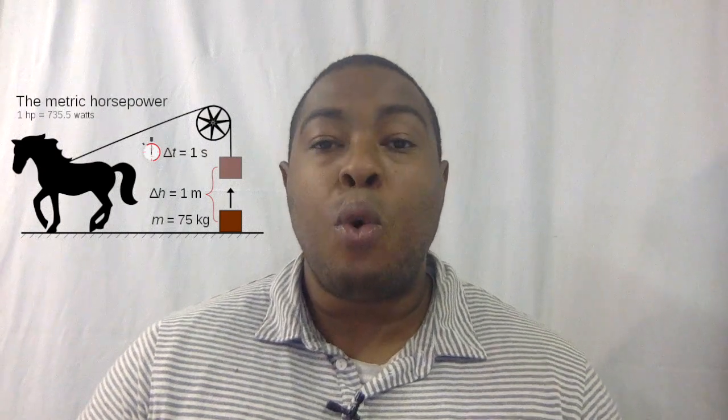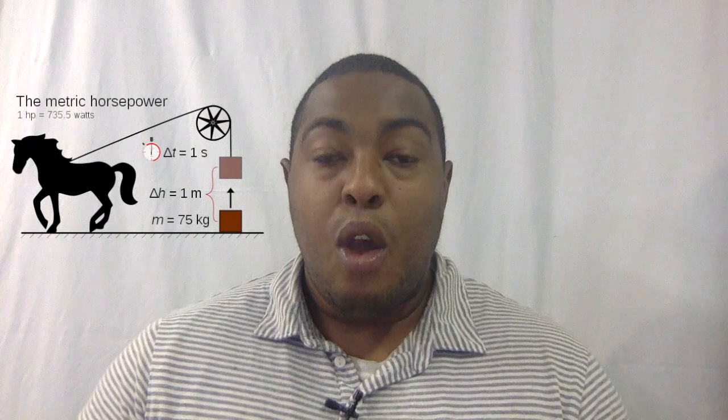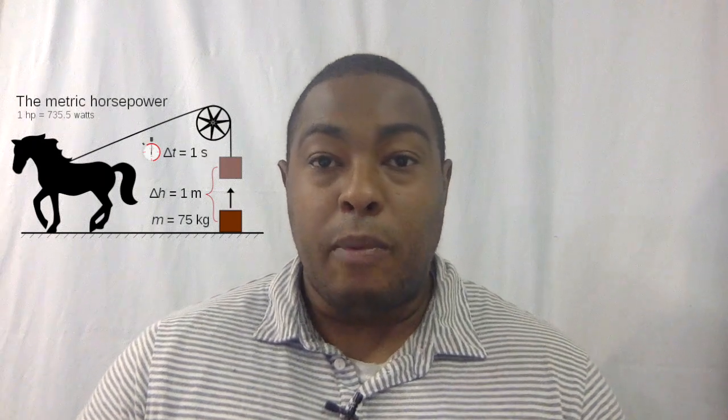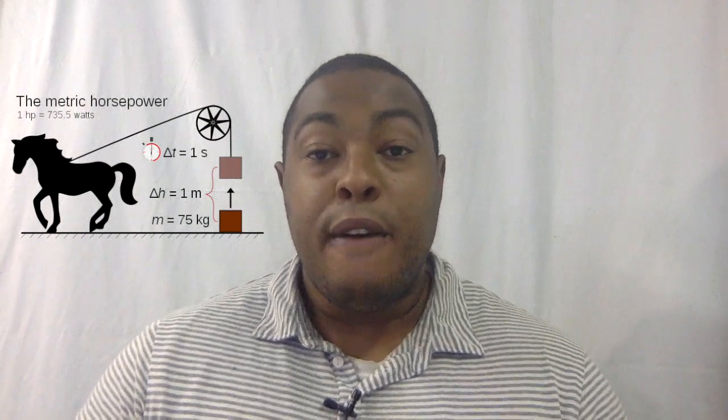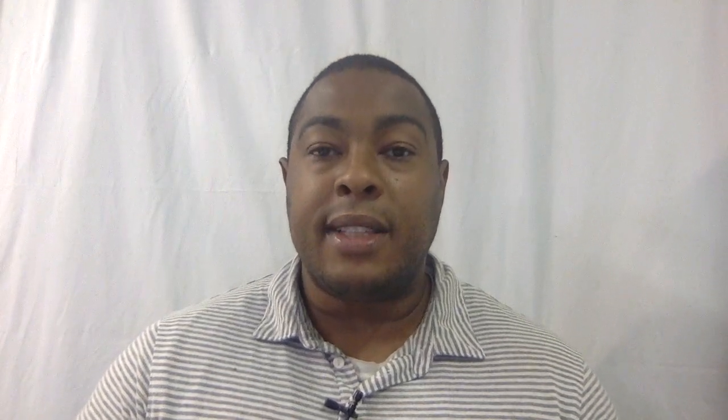He said if a horse can pull this piece of mass one meter upward from the ground for one second, this engine can do the same thing. Similarly, we can say that this engine has X amount of horsepower because it can do what a horse can do this many times. So horsepower is a unit of an engine's ability to perform a certain task.